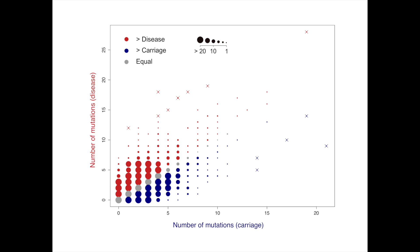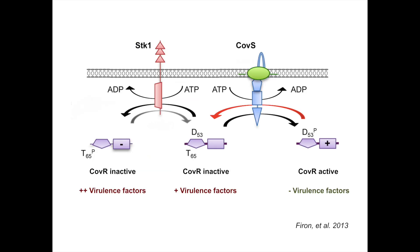Among the various genes that we found to be highly affected, specifically in strains from disease, there were two known as COVAS and STK1 that are particularly interesting. They are part of a larger regulatory network known as COVAR-S that controls the expression of many virulence-associated genes.